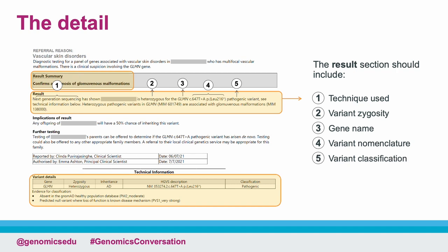5. How the lab has classified the variant — in other words, have we classified it as likely pathogenic, pathogenic, or a variant of uncertain significance? And 6. The gene-disease association, with reference to the disorder and the gene's OMIM ID. Here, the lab has described that the glomulin gene is associated with glomuvenous malformation, which fits with the patient's clinical presentation.